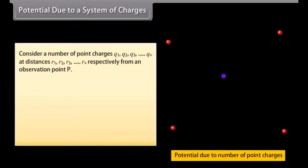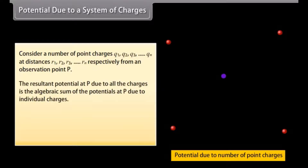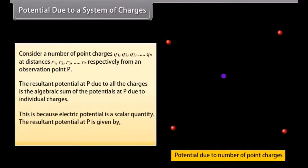Potential due to a system of charges: Consider point charges Q1, Q2, Q3, and so on till Qn at distances R1, R2, R3, and so on till Rn from a point of observation P. The resultant potential at P due to all the charges is the algebraic sum of the potentials at P due to individual charges, because electric potential is a scalar quantity. The resultant potential is given by V equals V1 plus V2 plus V3 and so on till Vn.